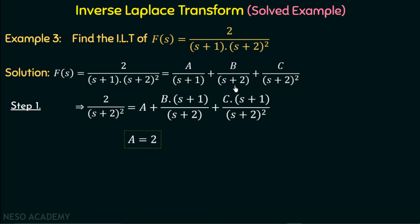We have (s+2) in the denominator of B, and to isolate B we need to multiply (s+2) on both sides. However, we cannot find out the value of B by substituting s equal to minus two, because we also have one factor (s+2) in the denominator of C when we multiply (s+2) on both sides. If we substitute s equal to minus two, then this factor will become undefined.